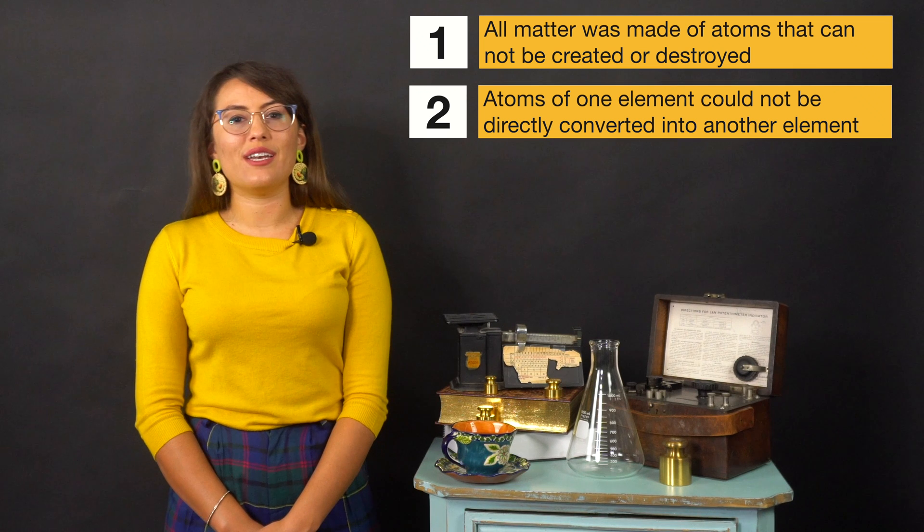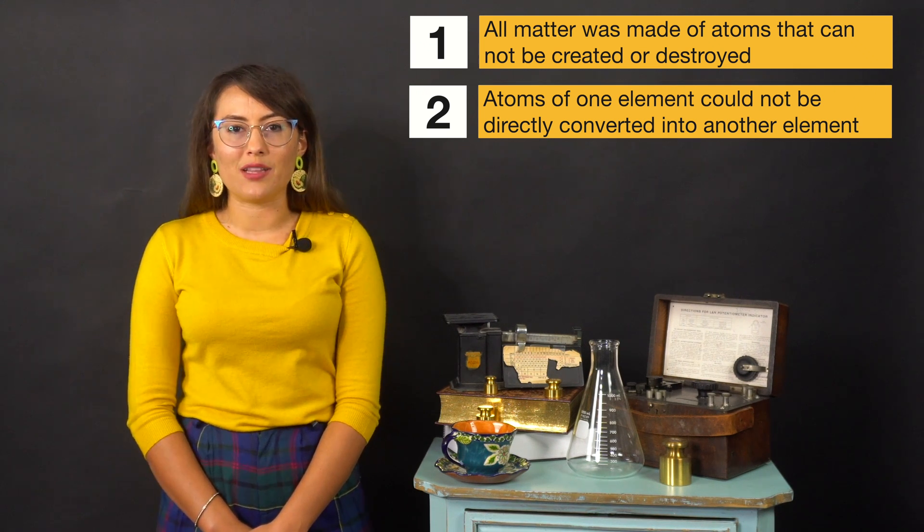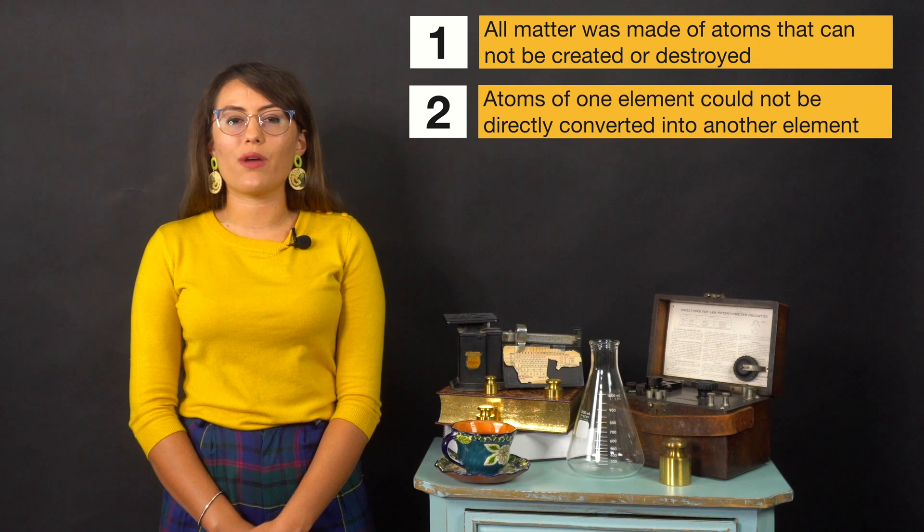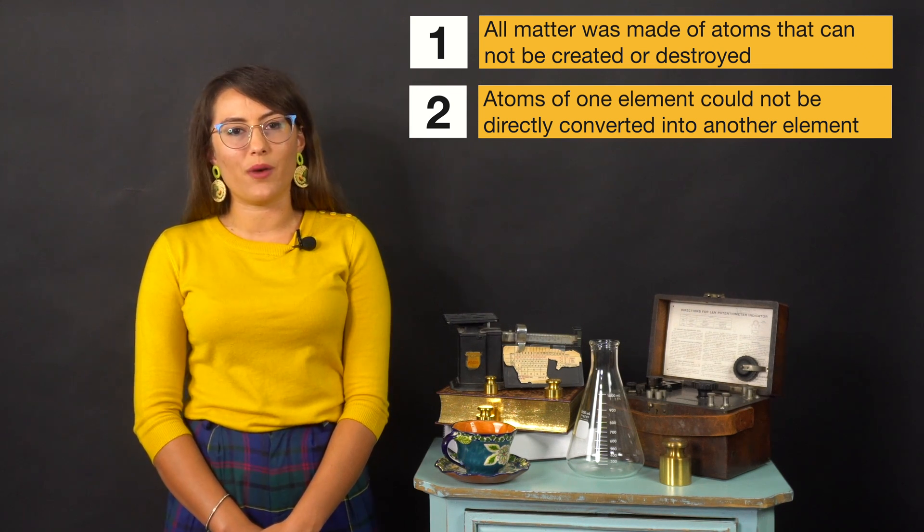Second, atoms of one element could not be directly converted into another element, and chemical reactions were the result of atoms of different elements breaking apart and recombining in different ways.